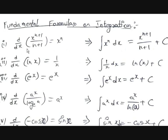If we take d/dx of x^(n+1) / (n+1), then it equals x^n. Because 1/(n+1) is a constant, it comes outside, so we get 1/(n+1) into d/dx of x^(n+1), which is (n+1) · x^n, and we get x^n.